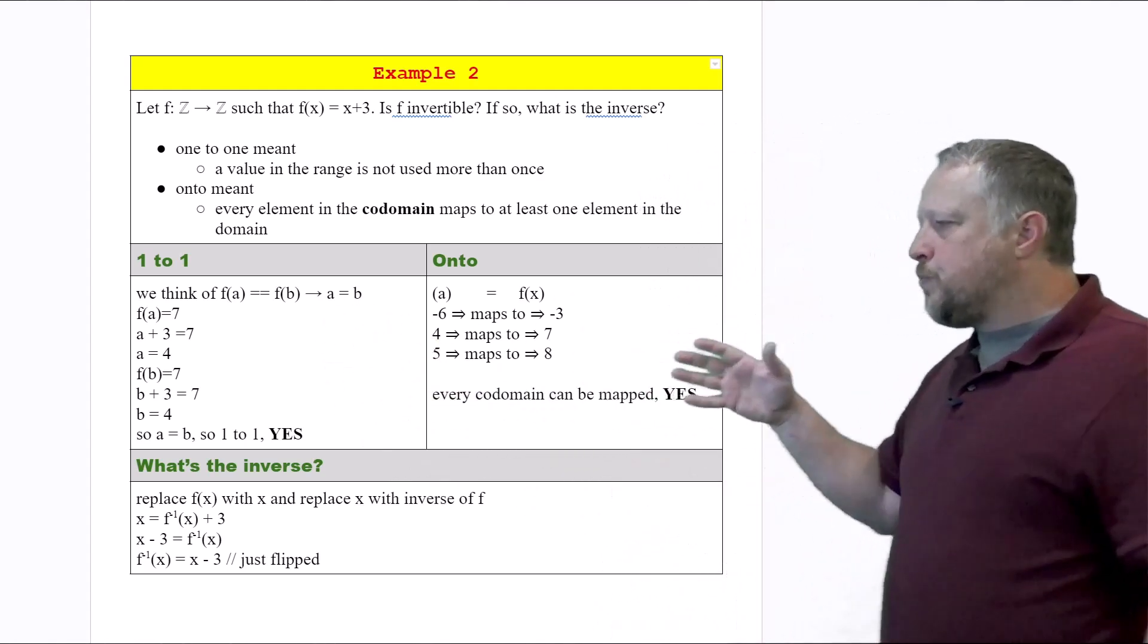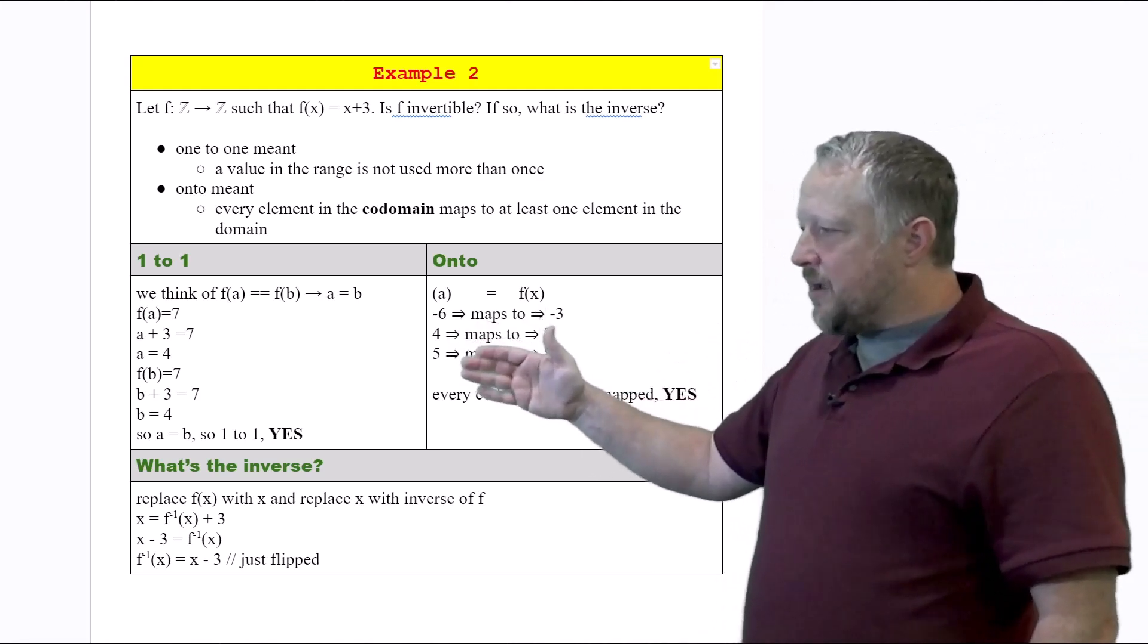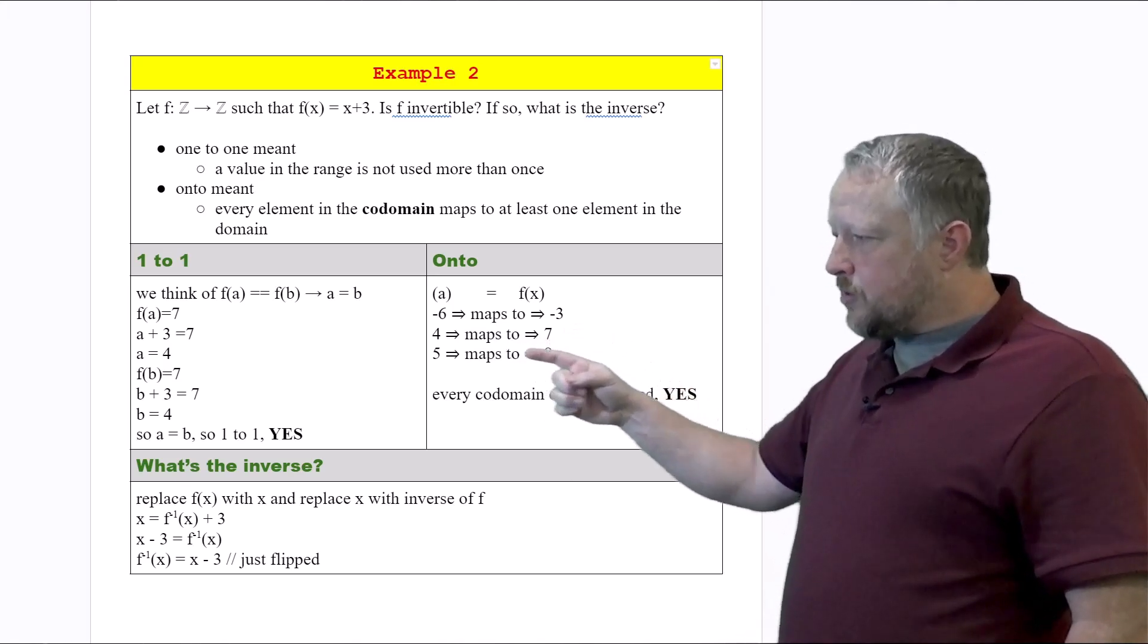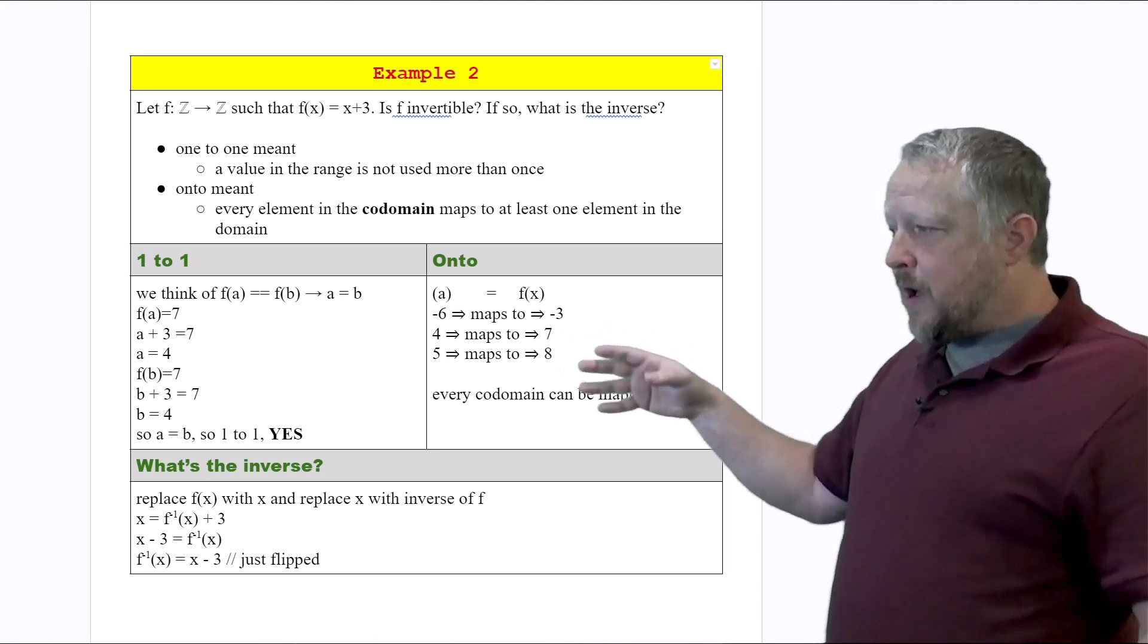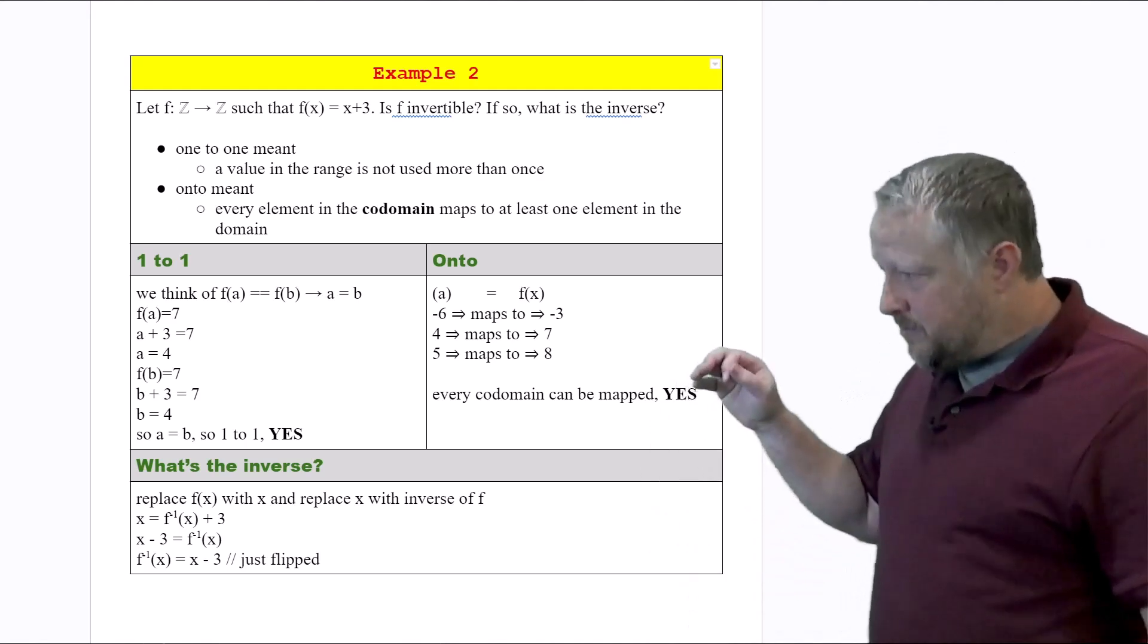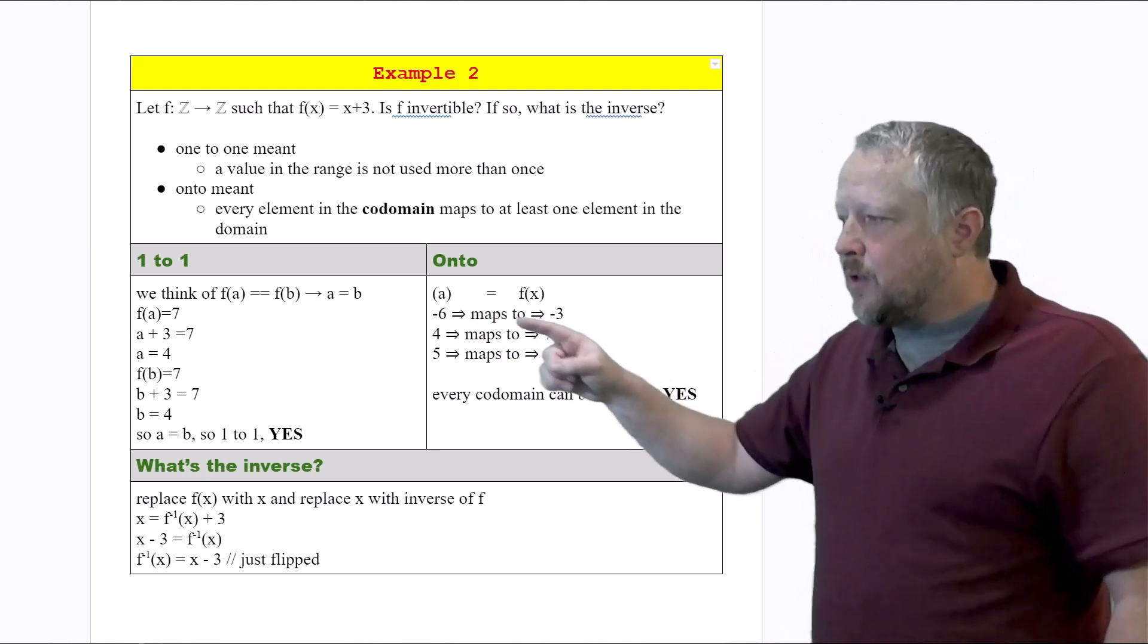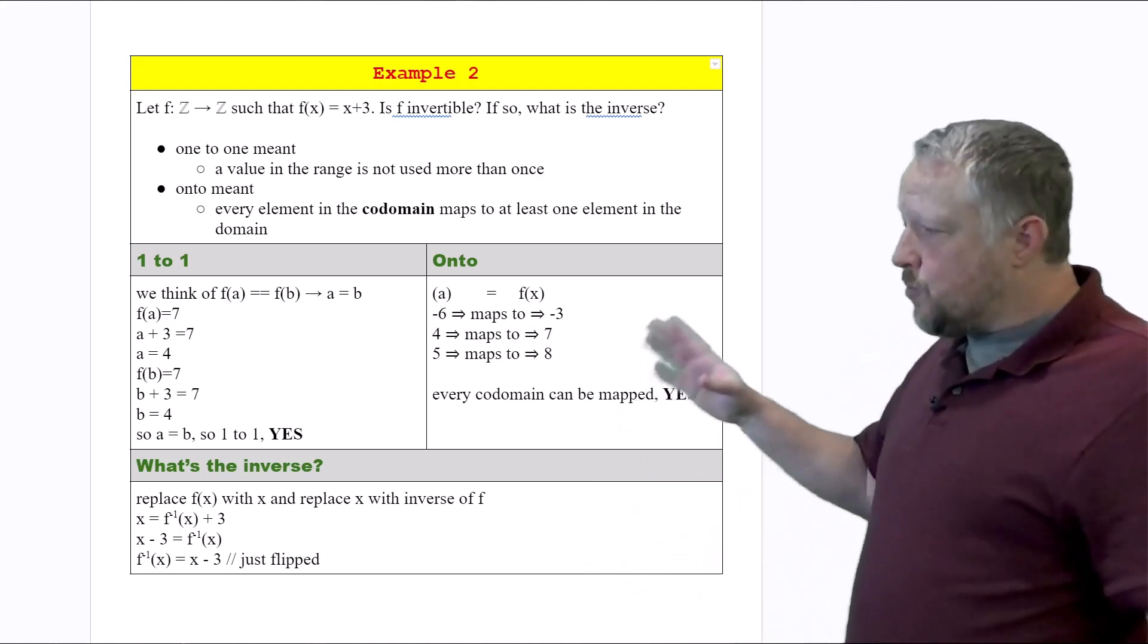For the onto portion, which is a little bit more interesting, but still okay, is that I try to give it basically a sampling of different numbers here of y values, and that's going to map to our domain of different values here. And notice it can go negatives, it can go positives, it can go anywhere that we want. We really should try to do a zero in here as well. But yes, for an onto, every element in the codomain is going to map to at least one element in the domain. So we're in good shape when it comes to onto as well.